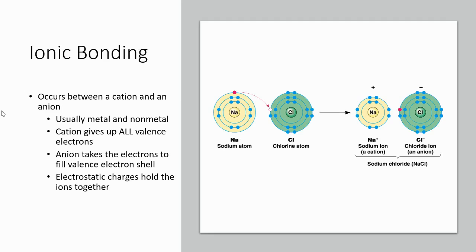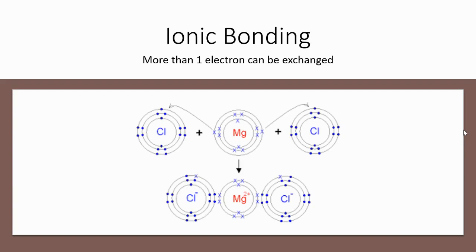Ionic bonding occurs between a cation and an anion — usually a metal and a non-metal. The metal is going to give up all of its valence electrons to the non-metal, so the metal forms a cation and the non-metal forms an anion. This attraction between the positive and negative charges is what holds the structure together. For example, one sodium atom gives up all its valence electrons to one chlorine atom. But it doesn't have to be that ratio — magnesium needs to give up two valence electrons, so it gives one to each of two chlorine atoms, forming two chlorine anions and one magnesium cation.